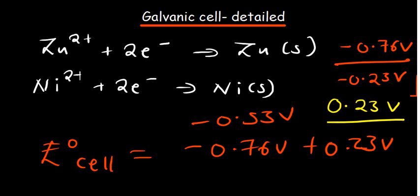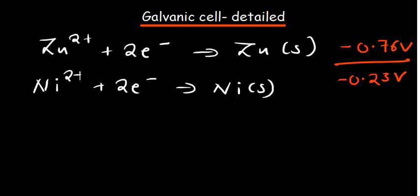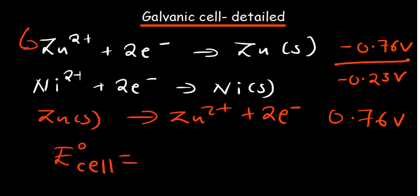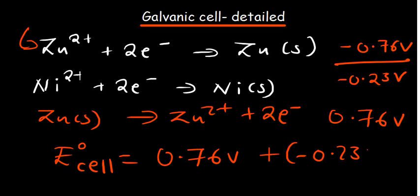This tells us that we're supposed to do the opposite. Instead, we reverse the first reaction — the zinc reaction — so we have zinc solid on the left giving zinc²⁺ plus two electrons. This gives us a positive 0.76. Now we add 0.76 plus negative 0.23, and the result is going to be a positive 0.53. This galvanic cell in this kind of setup is feasible — it can work.